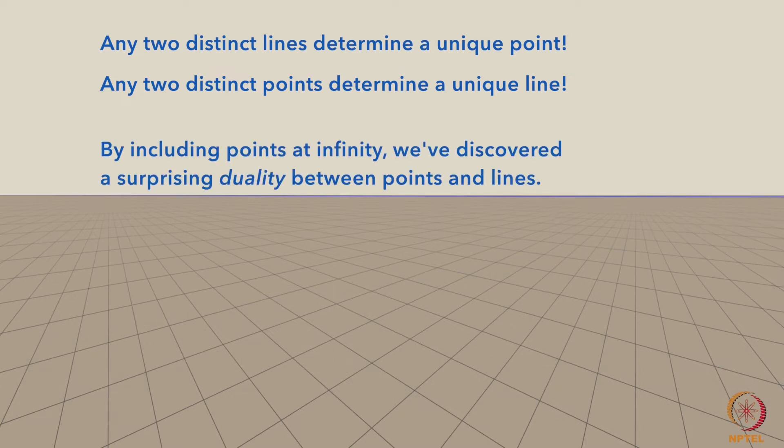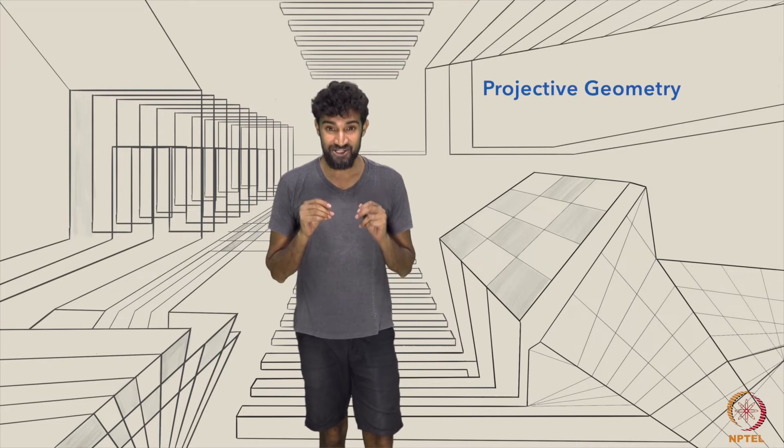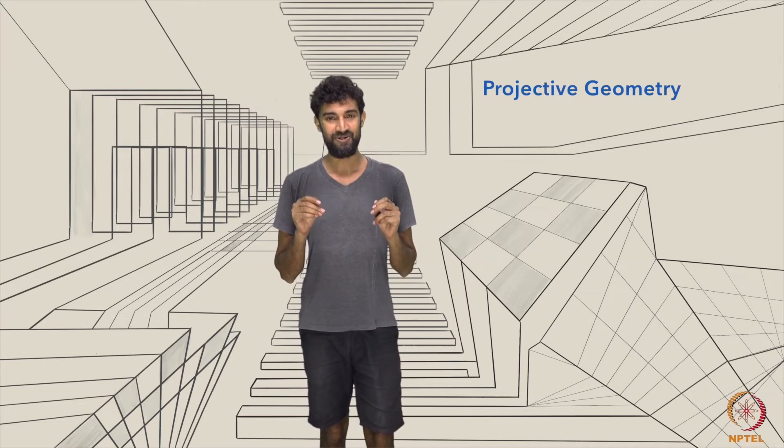Somehow, by including points at infinity, we've discovered a surprising duality between points and lines. In fact, we're not at all crazy to imagine a geometry that includes points at infinity, but in which there are no lengths or angles, only points, lines, and intersections. It goes by the name of projective geometry, and mathematicians have been studying it for thousands of years, discovering unexpected meetings of points and lines, which are also known as coincidences.